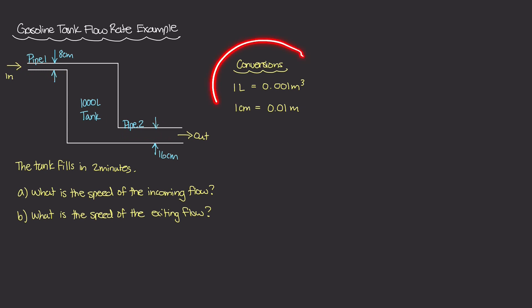I've placed two conversions we'll need. The first is that one liter equals 0.001 meters cubed — a volume conversion. The second is a length conversion: one centimeter equals 0.01 meters, or equivalently, one meter equals 100 centimeters.